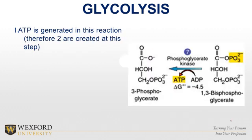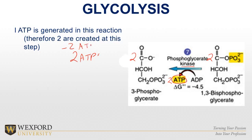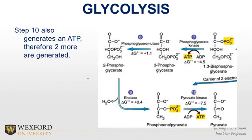Now we go to phosphoglycerate kinase — there's that kinase word again — and now we get an ATP out. But remember, it happens twice, so we get two ATPs. We started at negative 2 ATP, so now we've broken even. At step 10, the last step, pyruvate kinase also gives us two more ATPs. So now we're at plus two — a net gain of two ATPs directly from glycolysis.